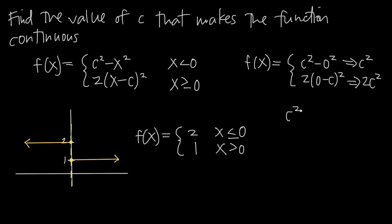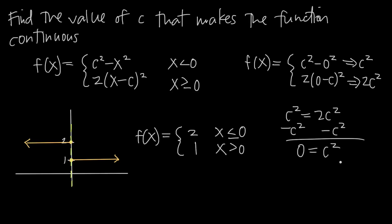We set c squared equal to 2c squared. Solving for c: subtracting c squared from both sides gives 0 on the left and c squared on the right. Taking the square root of both sides, c is equal to 0. Therefore, the value of c that makes the function continuous is c equals 0.